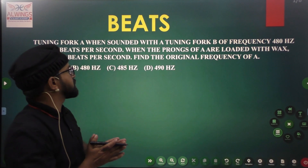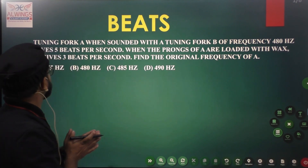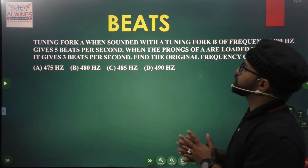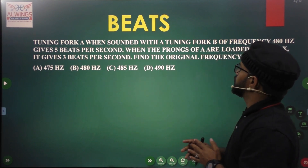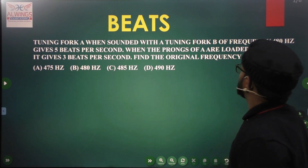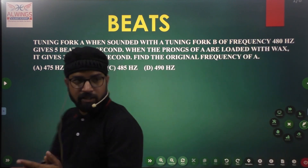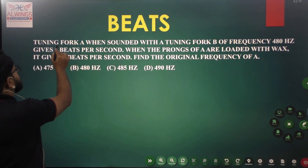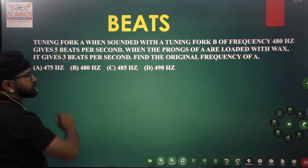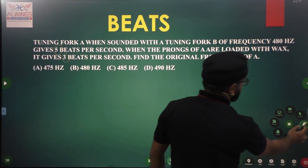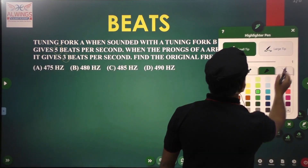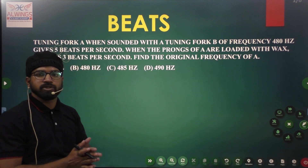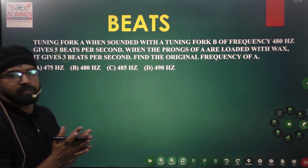In this question, they are saying that tuning fork A when sounded together with tuning fork B, the beats formed are 5. When the prongs of A are loaded with wax, the beat frequency becomes 3. Earlier beats were 5, now beats are 3. We are supposed to find the original frequency of tuning fork A before waxing.